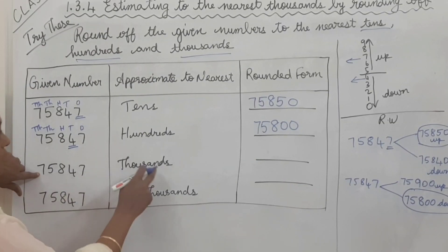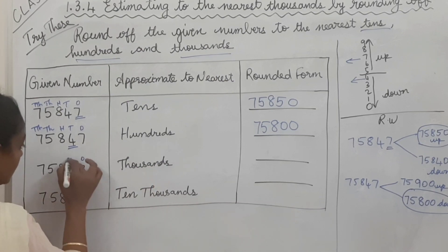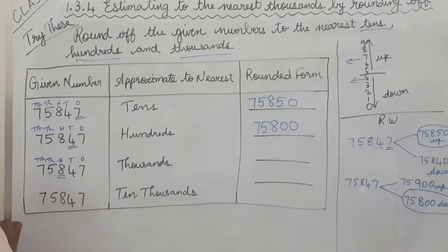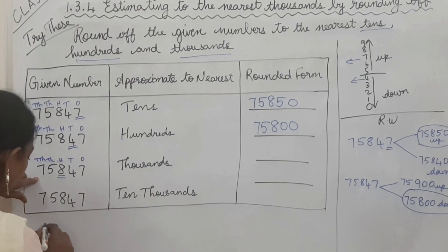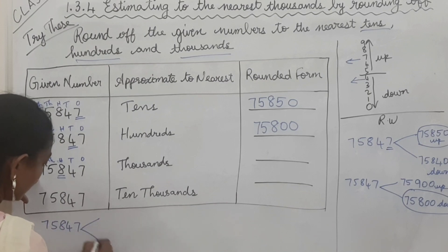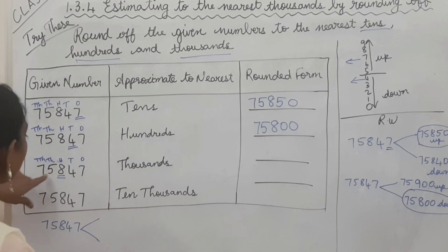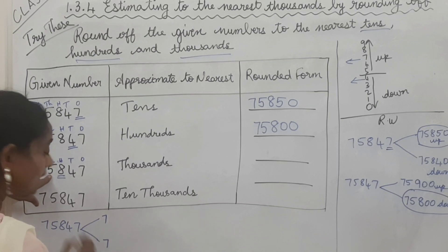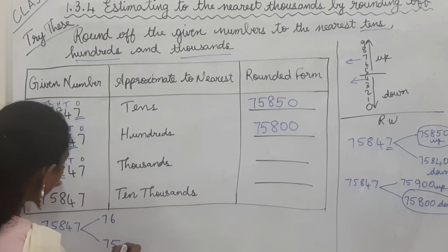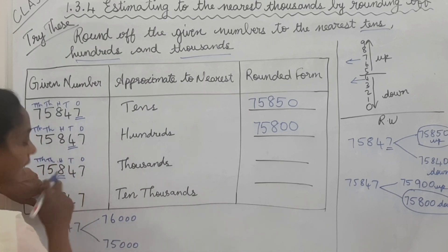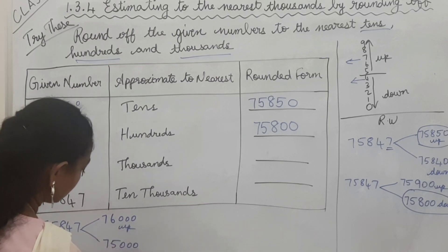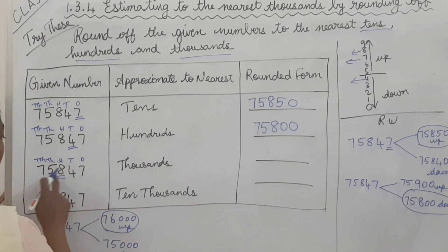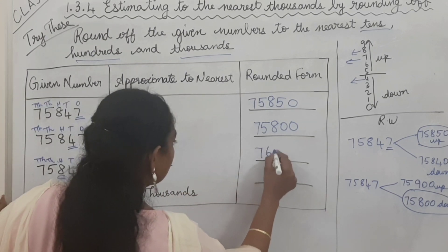Now round off 75,847 to the nearest thousands. To round off to nearest thousands, we look at the hundreds place, which is 8. Write 75,847 and put two arrows. The ten-thousands digit 7 stays same. The thousands digit 5 stays below and becomes 6 above, followed by three zeros - giving 75,000 below and 76,000 above. The hundreds digit 8 is in the upper range, so 75,847 is rounded off to 76,000.